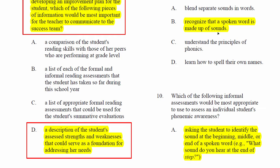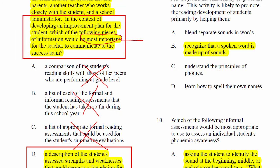Other options — like comparing the student's reading skills with peers performing at grade level — are possible things to discuss, but that's not the purpose of the meeting. The purpose is to address what challenge the student has that requires a team effort. 'A list of formal and informal reading assessments' — those are certainly things you'd bring, but the question asks what is most important. Options A through C might all come up during discussion, but it's a pointless discussion unless members know why they're there. That's why D is correct.